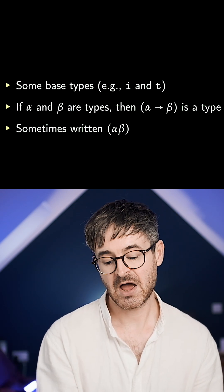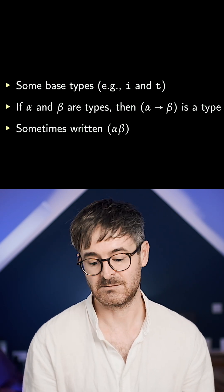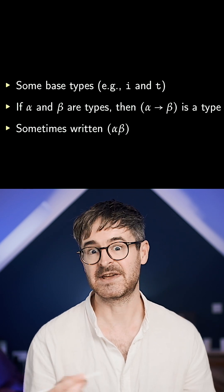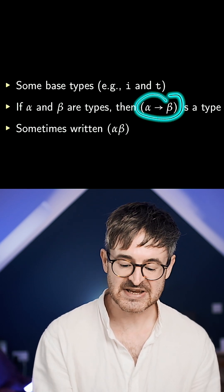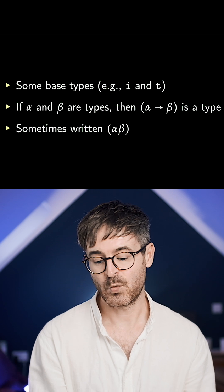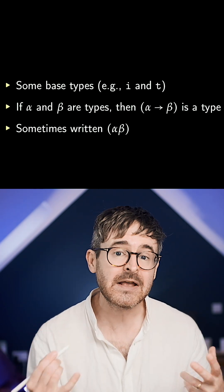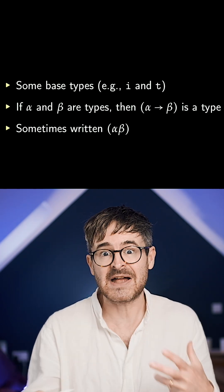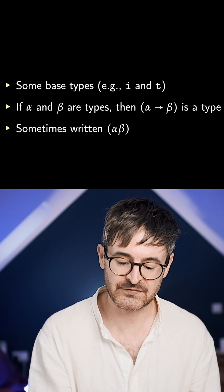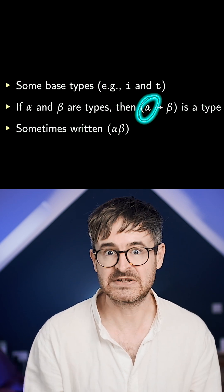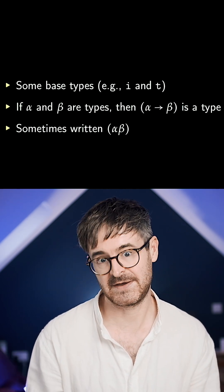Whenever I've got two types, I can put an arrow between them. So alpha to beta is going to be a type. Sometimes you'll see this written like this without the arrow. And we're going to think of things of that type as basically being functions from alpha-type things to beta-type things.